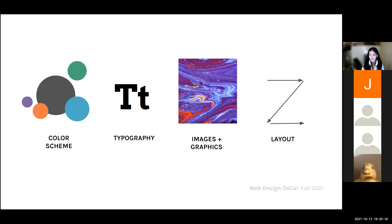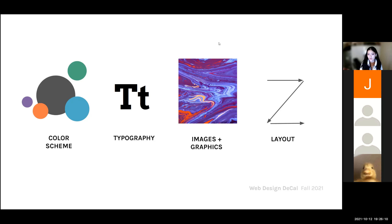The next topic is images and graphics. Know the image type you're using, when to use it, and make sure you're using the highest quality images possible. You don't want users to zoom in and see a pixelated image — that makes your website look unprofessional and like you didn't pay attention to detail. Finally, we have layout, which is really important because it's how users parse your website. Humans naturally read from left to right, top to bottom, so that's the natural flow of how a user's eyes travel a page. Make sure your layout is optimal for the content you want to display.